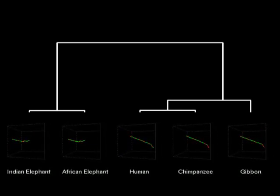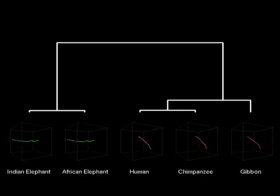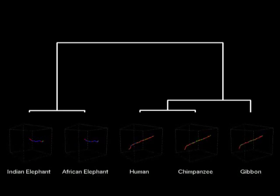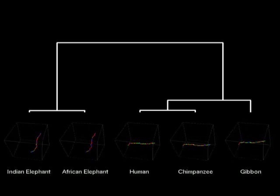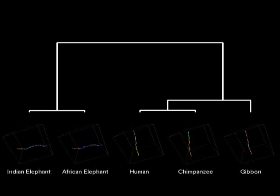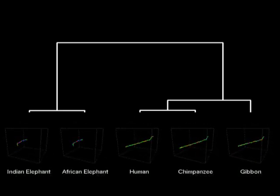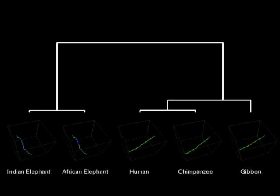We can see that the human and chimp DNA sequences are remarkably similar to one another, and at this resolution, they are almost the same. In contrast, the elephants, who branched off from the primates approximately 105 million years ago, look very different from the primates but very similar to each other.